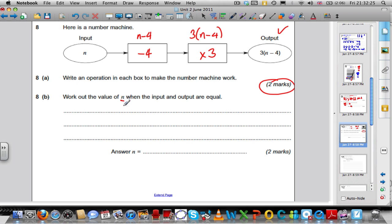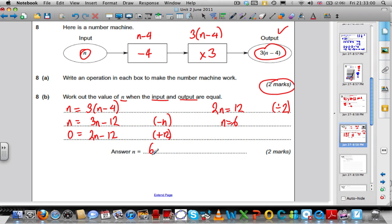Work out the value of N so the input and output are equal. Well, the input is N, the output is this. So when they're equal, is where N is equal to 3(N minus 4). Expand your brackets. N is equal to 3N minus 12. Subtract N from both sides. You get 0 equals 2N minus 12. Add 12 to both sides. You get 2N equals 12. And divide both sides by 2. You get N equals 6.